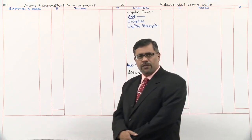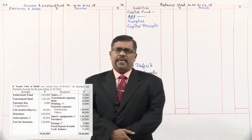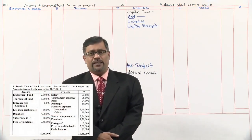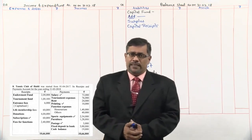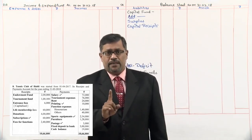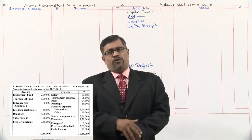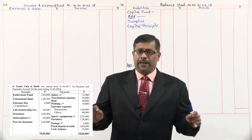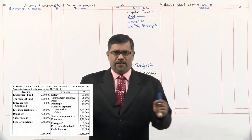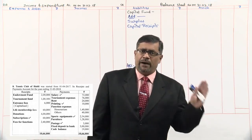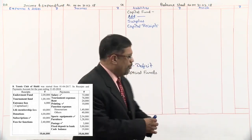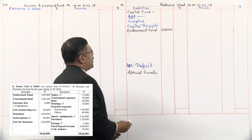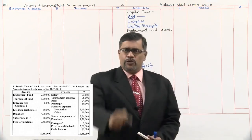Let us start the problem. We'll first take up the receipt side of the receipts and payments account, which starts with endowment fund — rupees 2 lakhs. Endowment fund is always a capital receipt. In the account we take revenue items and in the balance sheet we take capital items. So endowment fund, being a capital receipt, comes in the balance sheet. Rupees 2 lakhs — all capital receipts we'll take in the inner column so we can total and then take it in the outer column.